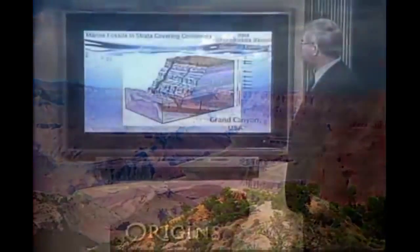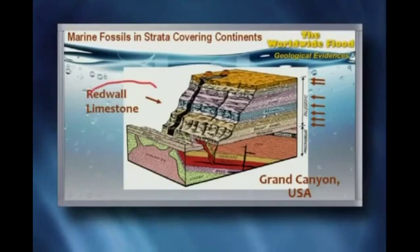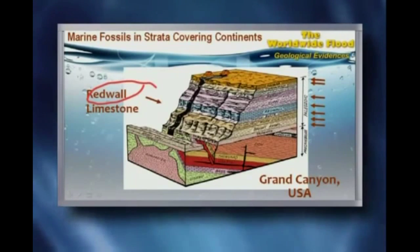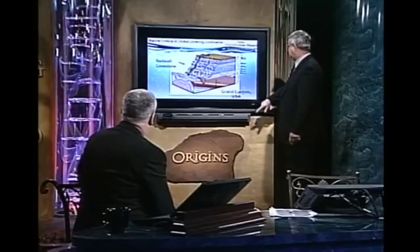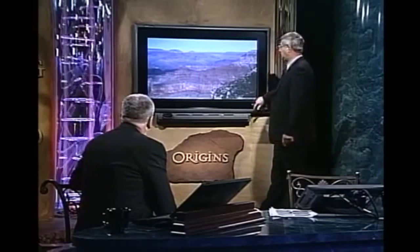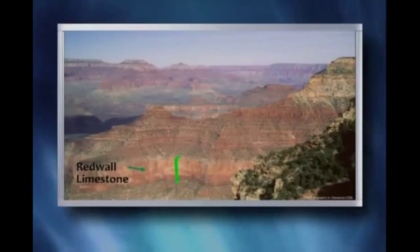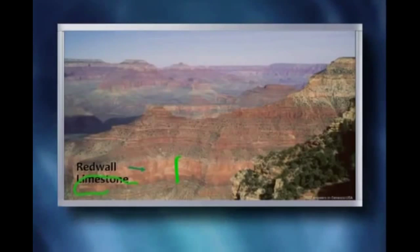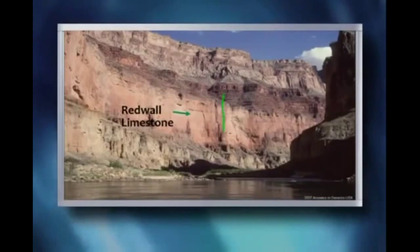One of those rock units to look at in detail is halfway down: the Redwall Limestone. You can see it halfway down the canyon — it forms a red wall. It's a limestone that forms a red wall; not all of geology is difficult. We can see the same when we get down to the Colorado River level.